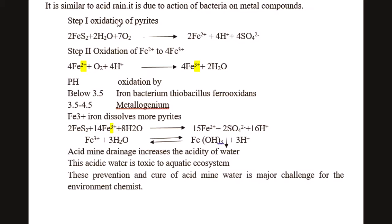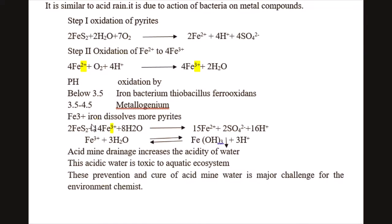To summarize acid mine drainage: the first step is oxidation of pyrite to Fe2+; the second stage is oxidation of Fe2+ to Fe3+, catalyzed by Thiobacillus ferroxidans below pH 3.5 or by Metallogenium between pH 3.5 and 4.5. The Fe3+ dissolves more pyrite, increasing acidity, which is toxic to the aquatic ecosystem. Prevention and cure of acid mine water is therefore a major challenge for environmental chemists.